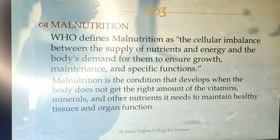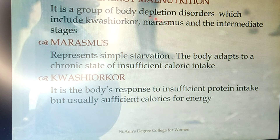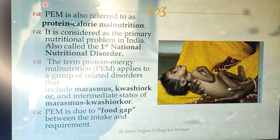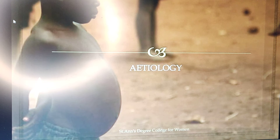The child cannot supply essential nutrients such as vitamins and minerals, which leads to protein energy malnutrition. Protein energy malnutrition has two main types: marasmus and kwashiorkor, and also marasmic kwashiorkor. Marasmus is a calorie insufficiency, while kwashiorkor is a protein and calorie insufficiency. Protein energy malnutrition is also called the first national nutritional disorder.